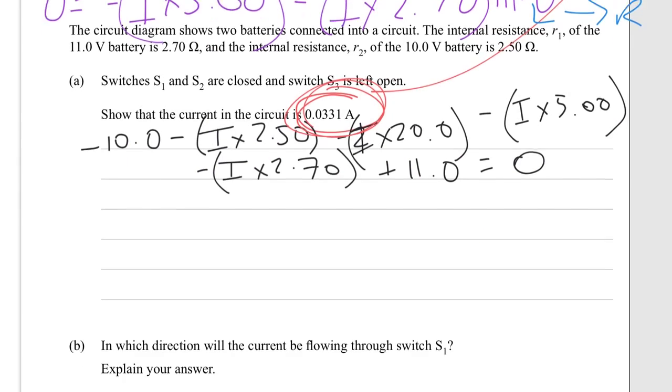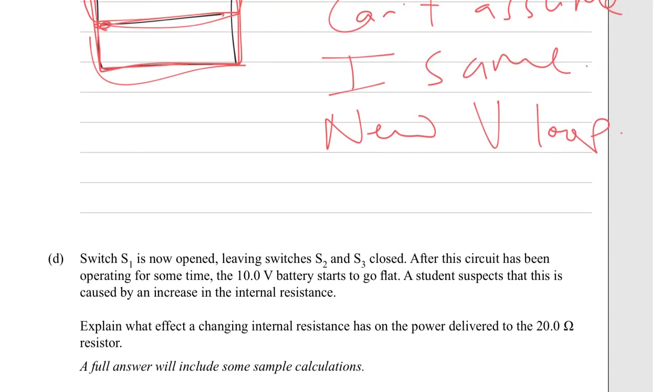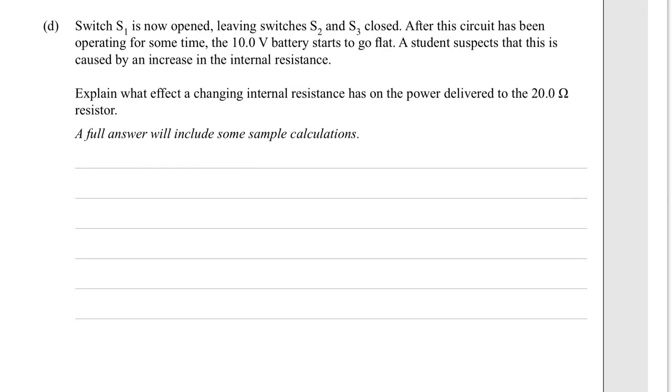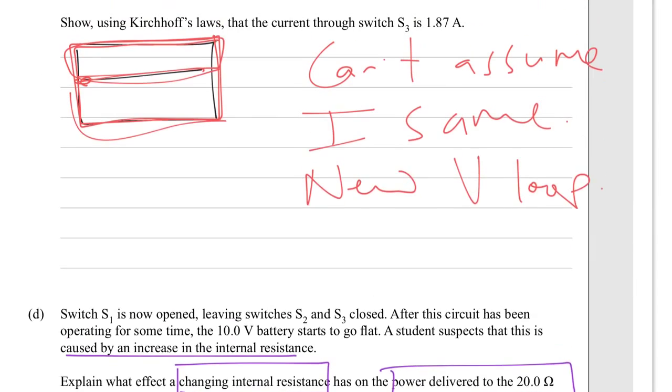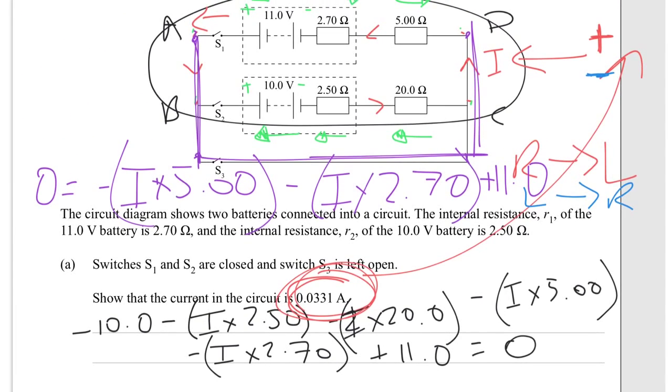Minus I times 2.70, plus 11.0. And you can rearrange that, find the new current and see if it matches up with what they've given you down there. Very messy now. Okay, D. Switch S1 is now open, leaving switches S2 and S3 closed. After the circuit has been operating for some time, the 10 volt battery starts to go flat. A student suspects this is caused by an increase in the internal resistance. Explain what effect a changing internal resistance has on the power delivered in the 20 ohm resistor. Let's just quickly refresh our memory, where's the 20 ohm resistor? There it is there.